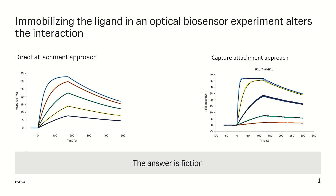Additionally, work by Navratilova showed identical results between KDs determined by Biacore and kinetics of inhibition, looking at whole cell experiments for a panel of roughly 20 small molecule inhibitors of seven transmembrane receptors. And finally, Gianetti also ran a similar experiment comparing inhibitory IC50s to Biacore KDs with a 0.98 correlation. So to summarize: fact or fiction, does immobilizing or attaching one binding partner alter the interaction? The answer is clearly fiction.